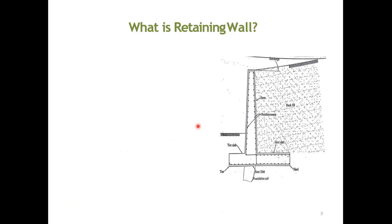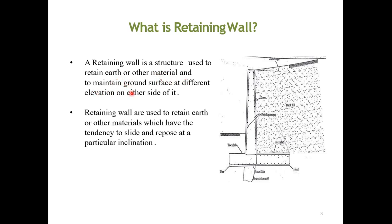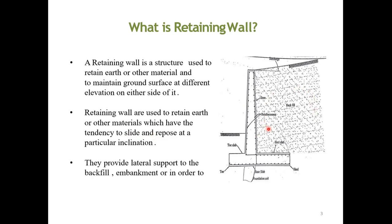Before jumping into our topic, first we have to understand: what is a Retaining Wall? A Retaining Wall is a structure used to retain earth or other material and maintain ground surface at different elevations on either side of it. Retaining walls are used to retain earth or other materials which have the tendency to slide and repose at a particular inclination. They provide lateral support to the backfill or embankment in order to hold them in a vertical position.